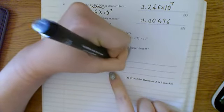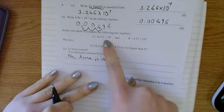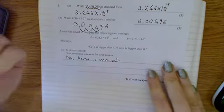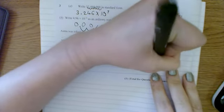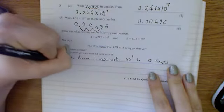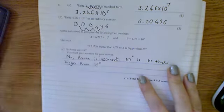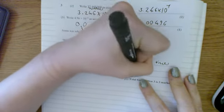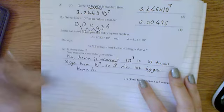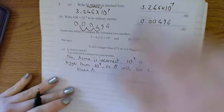Now why is she incorrect? The reason she's incorrect is because 10 to the power of 9 is much bigger than 10 to the power of 8. It's 10 times bigger. So I would write down 10 to the power of 9 is 10 times bigger than 10 to the 8th. So B will be bigger than A. There's lots of possible explanations there that would get you the mark, but just something along those lines would be perfect.